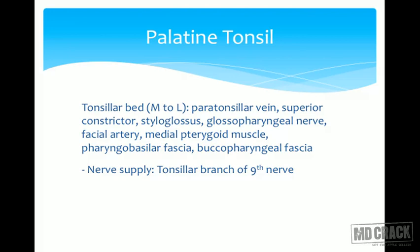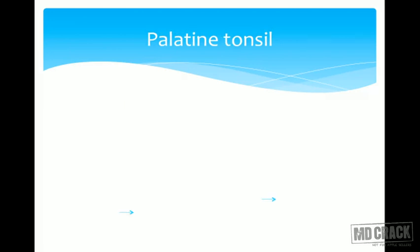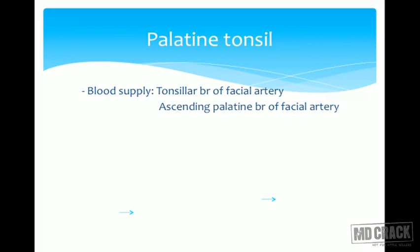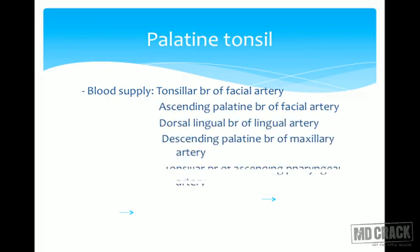The nerve supply of the tonsil is the tonsillar branch of the 9th nerve (glossopharyngeal nerve); the upper part is sometimes supplied by the lesser palatine nerve. Blood supply comes from five arteries: tonsillar branch of the facial artery, ascending palatine branch of the facial artery, dorsal lingual branch of the lingual artery, descending palatine branch of the maxillary artery, and tonsillar branch of the ascending pharyngeal artery.